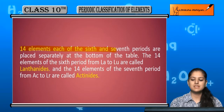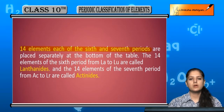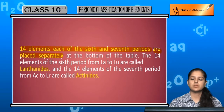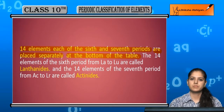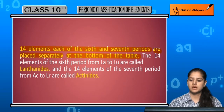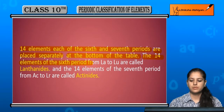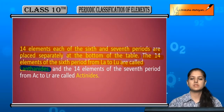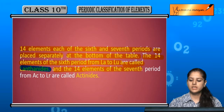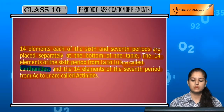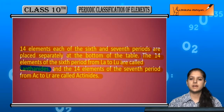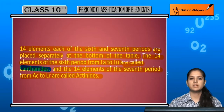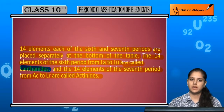The 14 elements each from the sixth and seventh periods are placed separately at the bottom of the table. The 14 elements of the sixth period, from lanthanum to lutetium, are called lanthanides. The 14 elements of the seventh period, from actinium to lawrencium, are called actinides. In total, these 28 elements are placed at the bottom of the periodic table.